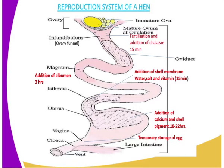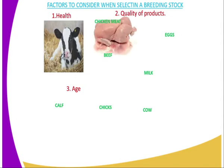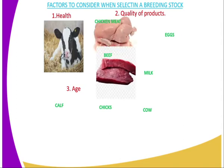Now we have the factors to consider when selecting breeding stock. The first factor is health. Animals which are supposed to be selected as breeding stock — to be used as future parents or to replace future parents — should have good health. They should be healthy because the cost of production for a healthy animal is lower compared to a sick animal.